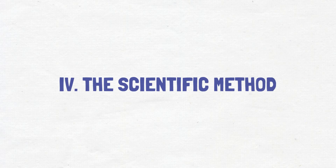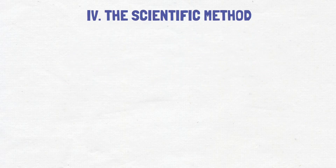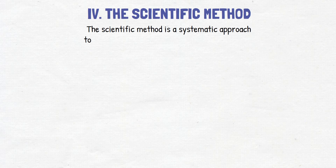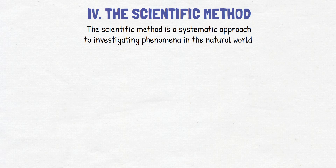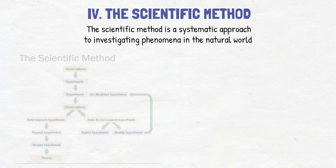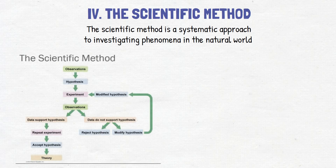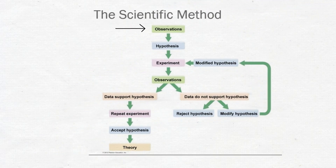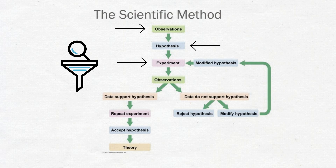The scientific method is a systematic approach to investigating phenomena in the natural world. It involves a series of steps that scientists use to collect and analyze data, test hypotheses, and draw conclusions. The first step is to make an observation. The second step is to form a hypothesis, which is a tentative explanation for the observation. The third step is to design and carry out an experiment to test the hypothesis. The fourth is to analyze the data and draw conclusions.